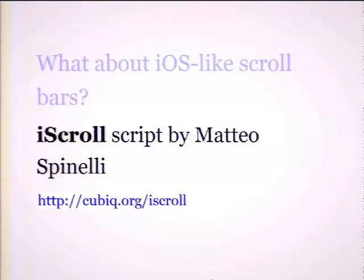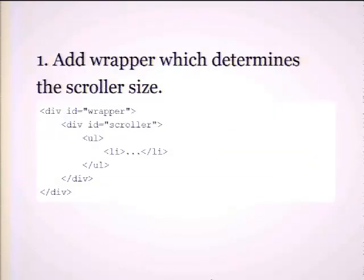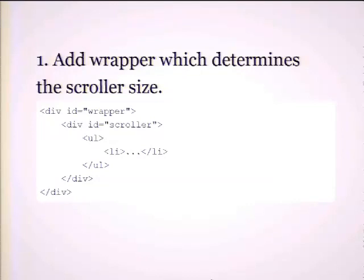I've used the iScroll library, written by Matteo Spinelli. You can download it at cubiq.org/iscroll. It's a very nice library. Here's what you need to do: add a couple of divs. The first div is a wrapper that determines the size of the scroller. The second is the scroller content area, which contains some content — some UL, text, or whatever. You also need to add some simple CSS for the wrapper, where position relative is a CSS tweak, and z-index positions it lower compared to other objects. You can also set a width — that's an optional parameter — and the height.